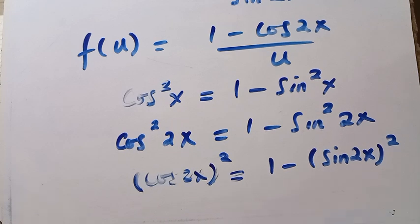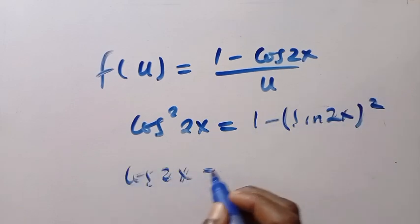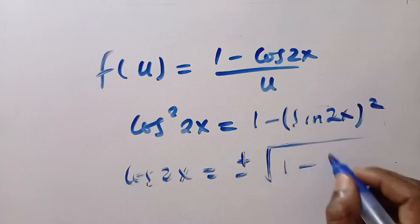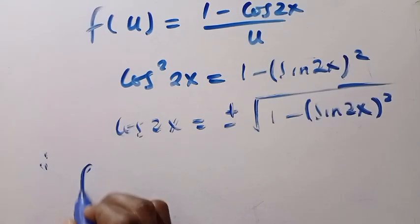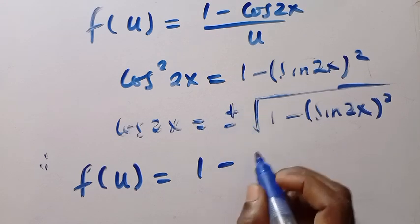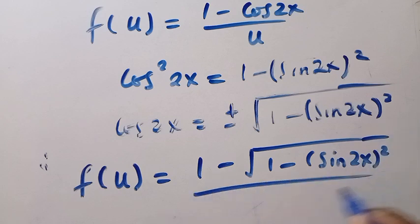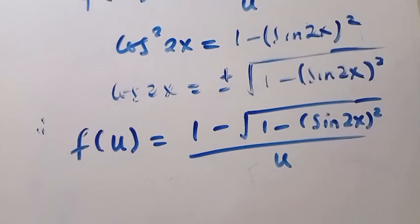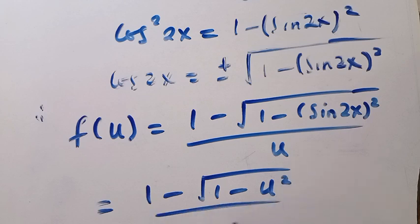So the next step is we are going to replace everything in the given f of u. Here we have cos squared 2x equals to this. So let's replace it — we take the square root of both sides. This gives cos 2x equals plus or minus the square root of 1 minus sin 2x all raised to the power of 2. So here we have f of u equals 1 minus the square root of 1 minus sin 2x squared, divided by u. But sin 2x is given as u already. So replacing that, we have 1 minus the square root of 1 minus u squared, divided by u.